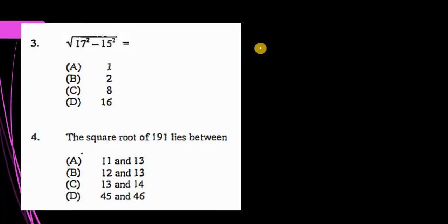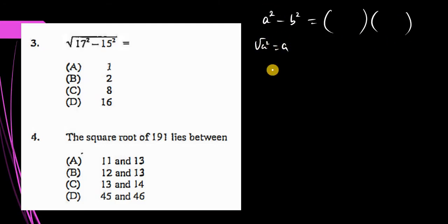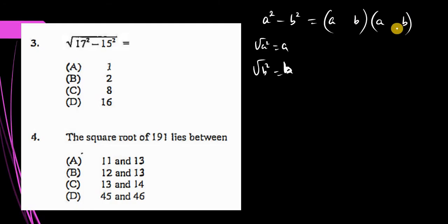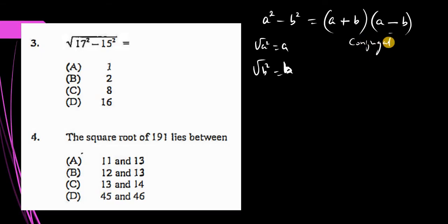If you don't know that 17 squared is 289 and 15 squared is 225, there's another approach. Do you know that if we have a squared minus b squared — the difference of two squares — we can factorize this? The square root of a squared is a, and the square root of b squared is b. In one bracket we put plus, in another we put minus, giving us the product of two binomials: (a + b)(a − b). These are called conjugates.